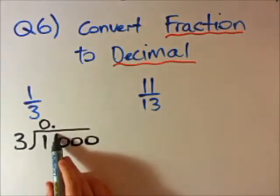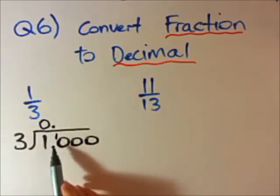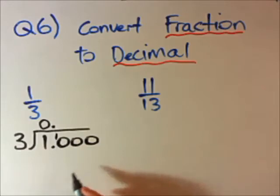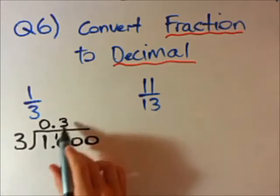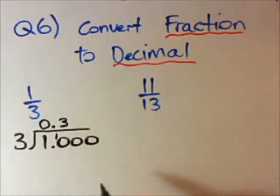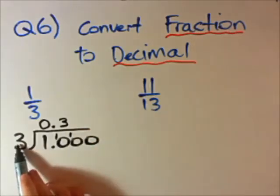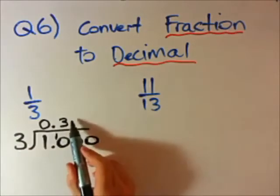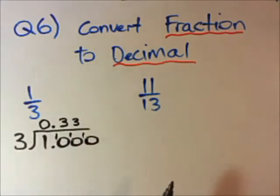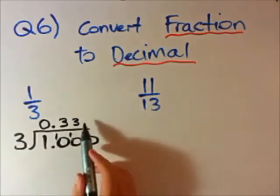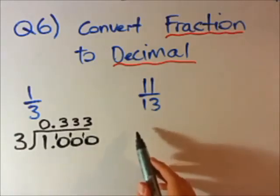Now this 0 turns into 10, because we have this 1 up here. How many times does 3 go into 10? Well, 3 times 3 is 9, so 3 goes into 10 three times. But 3 times 3 is 9, which is 1 short of 10, so again we have a remainder of 1. How many times does 3 go into 10 again? 3 times, with a remainder of 1. And if we keep going, we're going to keep getting this remainder of 1.